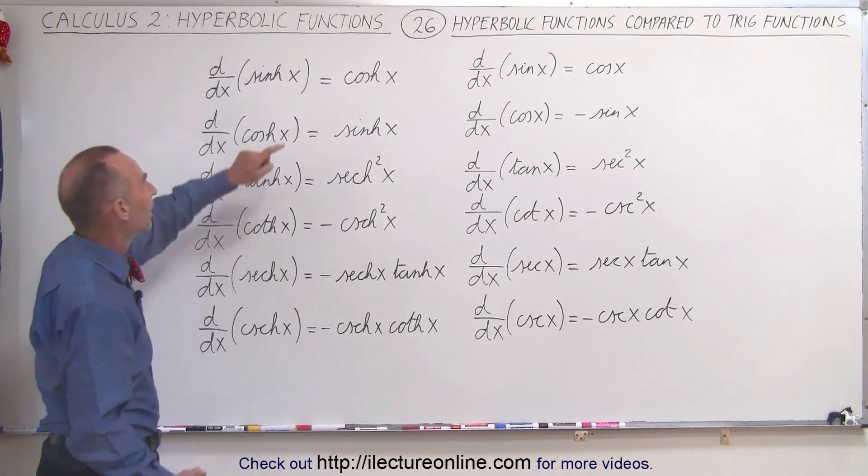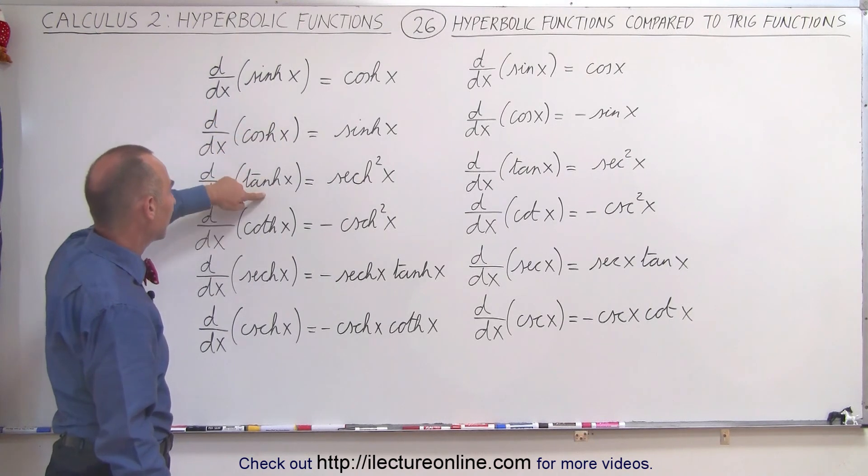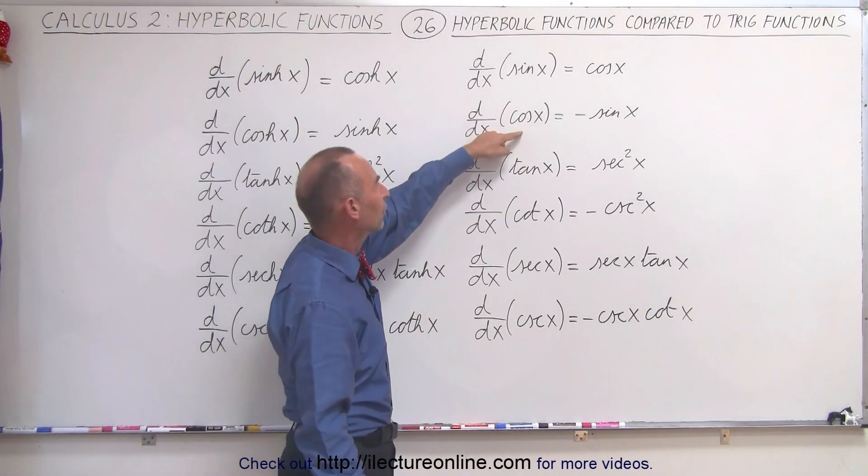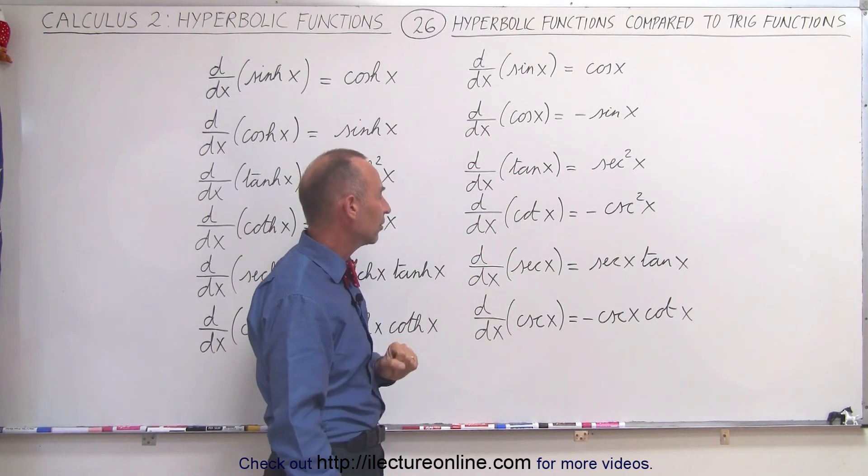Notice we have the hyperbolic sine, cosine, tangent, cotangent, secant, and cosecant versus the sine, the cosine, the tangent, the cotangent, secant, and cosecant.